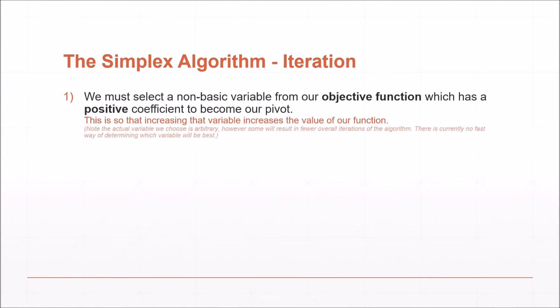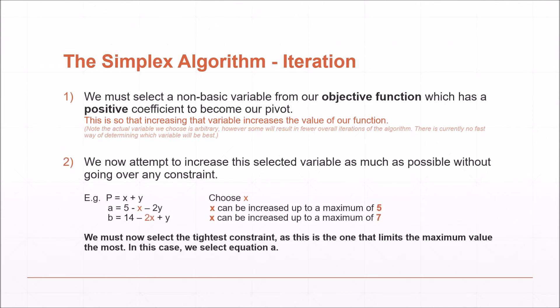To start the algorithm, we must first select a pivot variable — one with a positive coefficient in our objective function, so that increasing it increases the value of the function. We want to increase this selected variable as much as possible. In this case we have chosen x: in equation a it can be increased up to a maximum of 5, and in equation b up to a maximum of 7. Since 5 is the smallest, this is the tightest constraint, and we must select equation a.